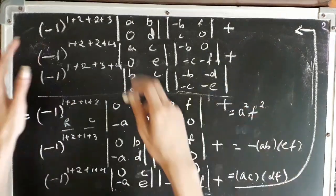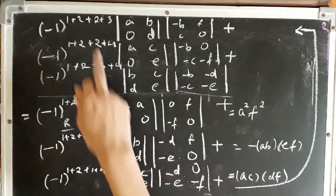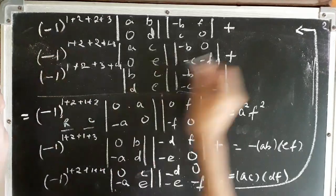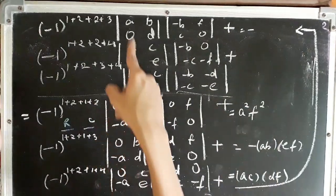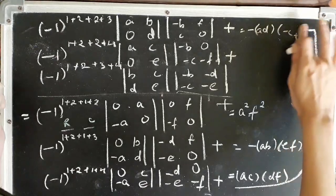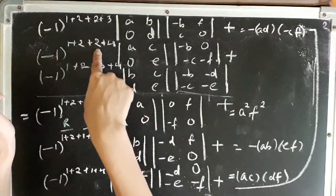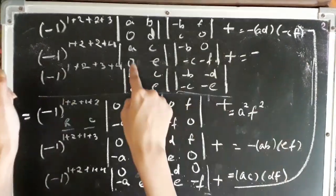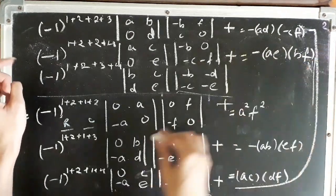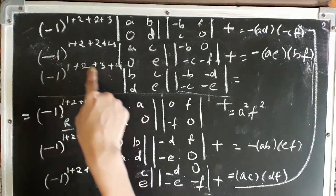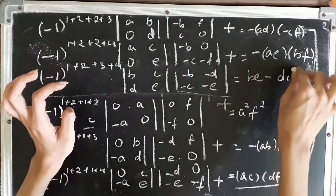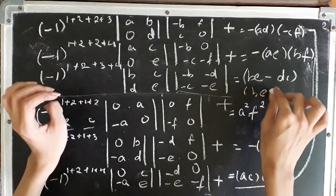The third determinant reduces to 0 times E minus minus A times C, which is AC, times DF minus 0, leaving AC times DF. The fourth determinant has an odd power, so we add a minus sign, giving minus AE times BF. The fifth determinant has an even power, no minus sign, giving BE minus CD times BE minus CD.